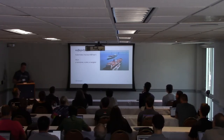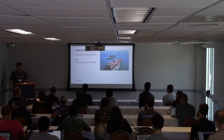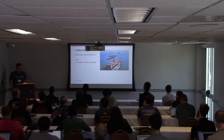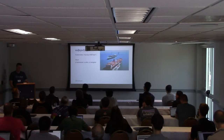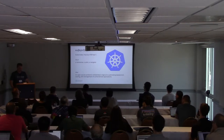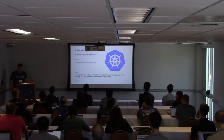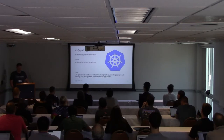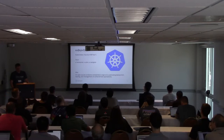Kubernetes is a Greek word meaning helmsman or navigator — it's a container orchestration engine, which makes sense because you have the helmsman of a container ship. It's an open source container orchestration engine for automating deployment, scaling, and management of containerized applications. So how do we containerize Presto so that it can work on Kubernetes? You may see K8S in the slides, which is just shorthand for Kubernetes — it's much easier to write.